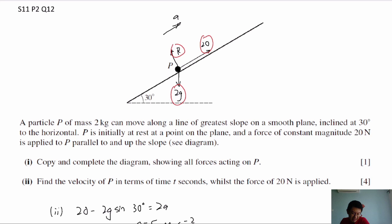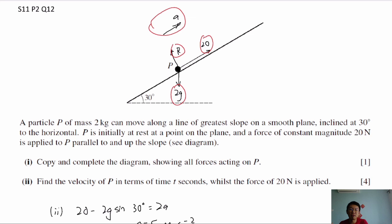For part 2, find the velocity of P in terms of T whilst the force of 20 N is applied. We need to find the acceleration first. For this particle P moving up, the weight is 2G and the force pulling it up is 20 N. We're not sure whether the particle will move up or whether 20 N is not enough, and it might actually slide down — we do not know. It depends on the forces: the 20 N and the 2G weight.